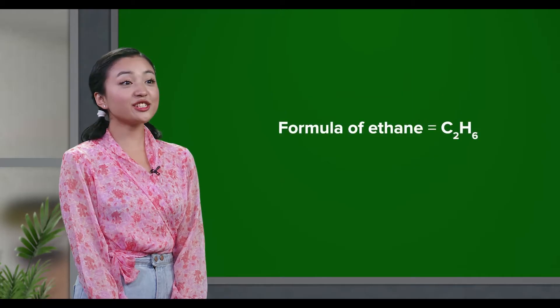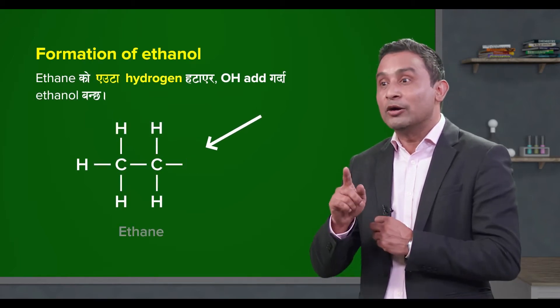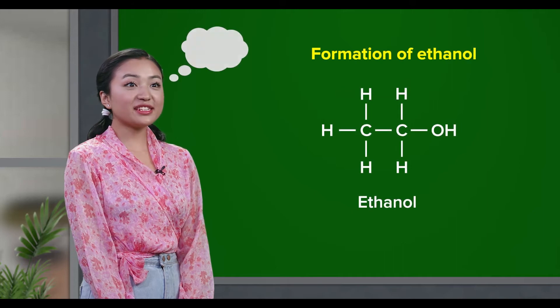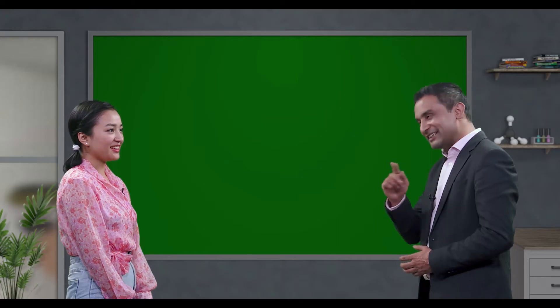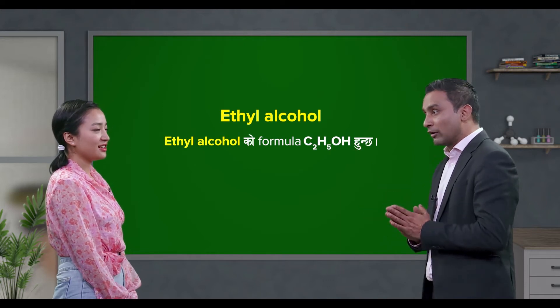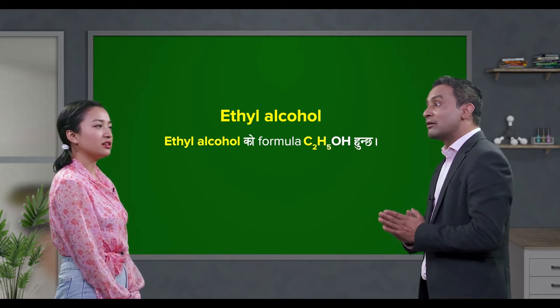Teacher, the formula is C2H6... I'm going to write the ethanol alcohol formula. The correct formula for ethanol alcohol is C2H5OH. Very good.